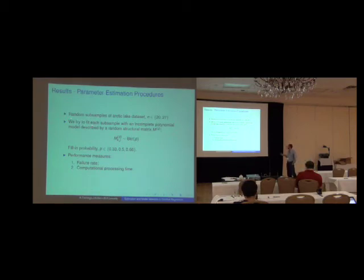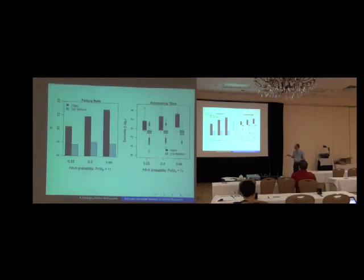And for each subsample generated, we try to fit with an incomplete polynomial model described by a random structural matrix M. In this case, what we do here is for each sample, we generate a random model indicating which coefficients must be present in the model and which ones are zero. In this case, we control that by a probability that we varied in this range. Well, we measured the failure rate of the method and the computational processing time. We compared our approach with Rejas's one.